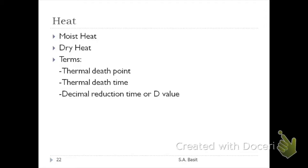Let's talk about heat. There are two types of heat. When water vapor is present, you call that method moist heat. If water vapor is absent, you call that dry heat. In using heat, you have to remember the following terms: the thermal death point, the thermal death time, and the decimal reduction time — also known as the D value.